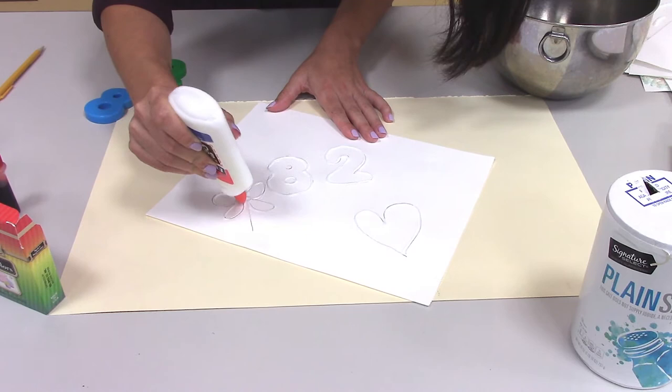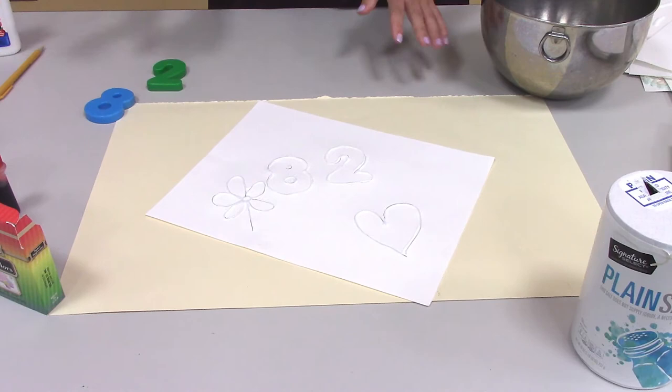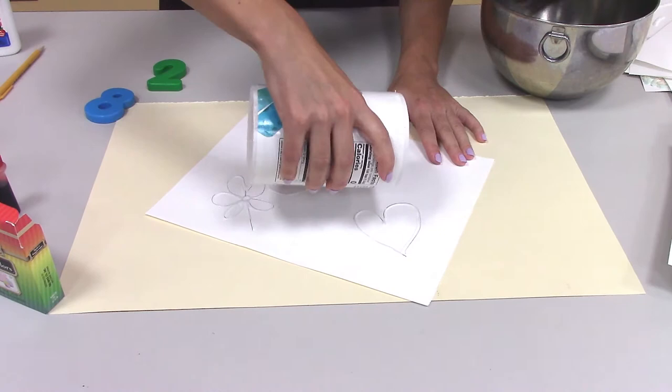All right. Nice work. Now this can be a bit messy so you may want to put a big piece of paper, some newspaper down, and you're going to take your salt and you're going to cover your glue completely. Wow, that's a lot of salt.